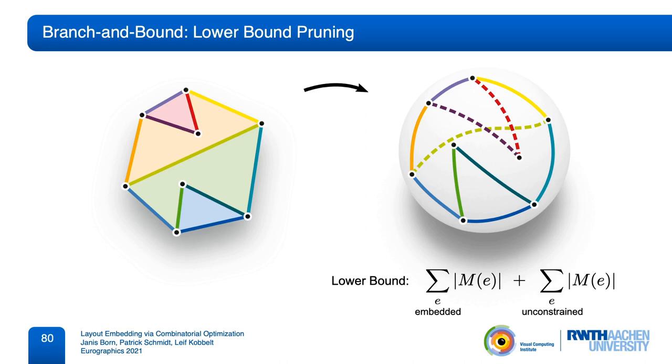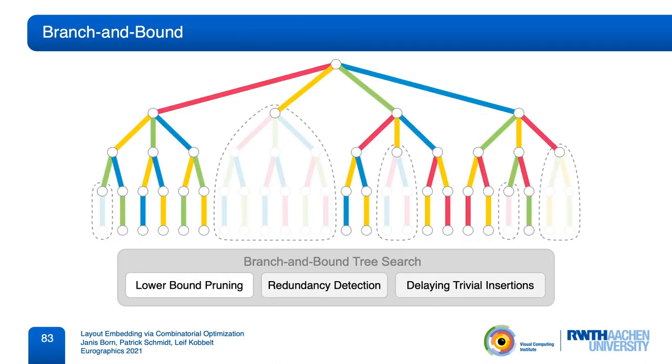By doing so, we will still only underestimate any true embedding cost. Since all unconstrained paths are locally shortest, they can only become longer if we properly resolve those intersections. Therefore this computation still constitutes a valid lower bound, but it gives a much closer approximation. In practice, this lower bound computation will quickly detect when a bad insertion increases the embedding cost and will then ignore such configurations.